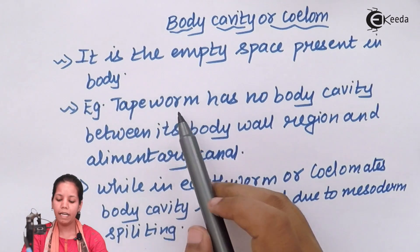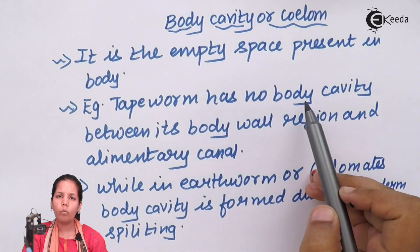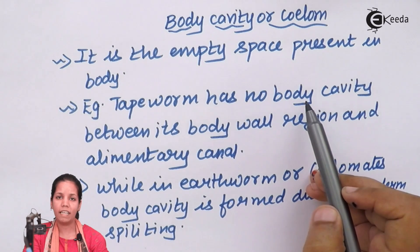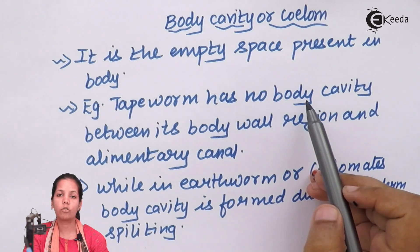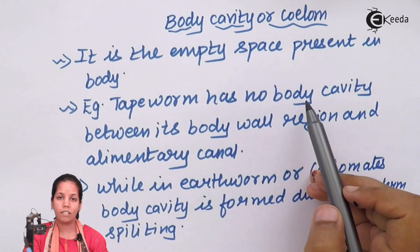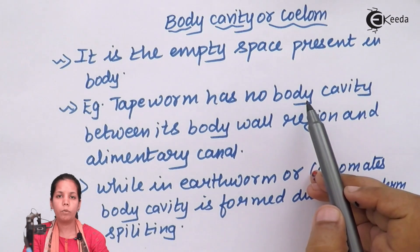For example, in tapeworm there is no body cavity. The structure of tapeworm is very small, and in that small structure there are organs condensed and kept — a respiratory system, digestive system, and circulatory system. So if in that tiny organism all the systems are present, where will the empty cavity or coelom be?